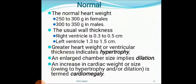Now, the lesions of the heart. Before going to the various lesions, let's see the normal weight of the heart and thickness of the wall. In females, the normal weight of the heart is 250 to 300 grams; in males, 300 to 350 grams. The right ventricular wall thickness is 0.3 to 0.5 cm and the left ventricular wall thickness is 1.3 to 1.5 cm. Greater heart weight or ventricular thickness indicates hypertrophy; enlarged chamber size implies dilatation. Increased cardiac weight or size is termed cardiomegaly.